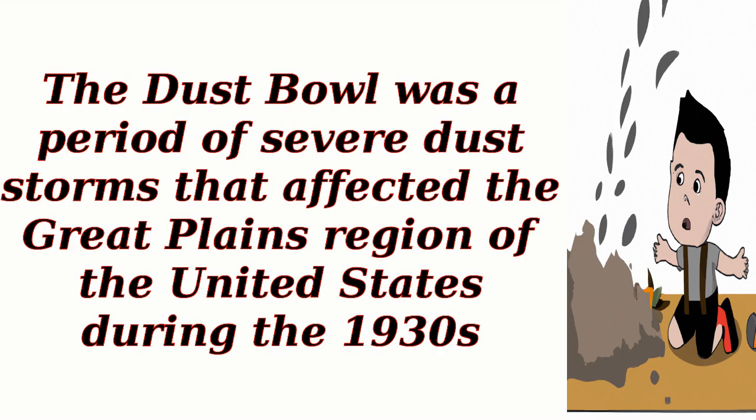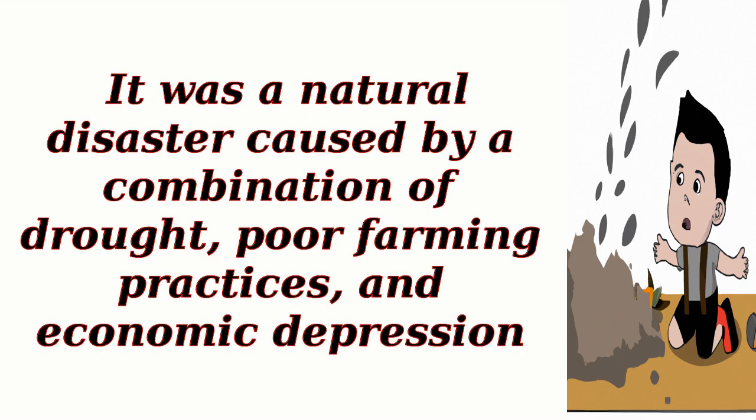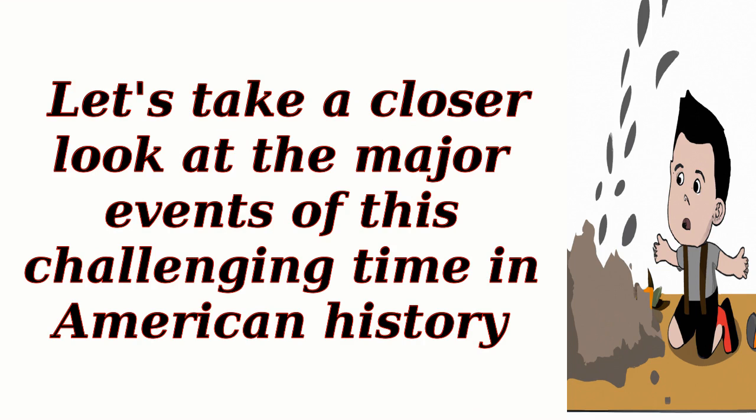The Dust Bowl was a period of severe dust storms that affected the Great Plains region of the United States during the 1930s. It was a natural disaster caused by a combination of drought, poor farming practices, and economic depression. Let's take a closer look at the major events of this challenging time in American history.